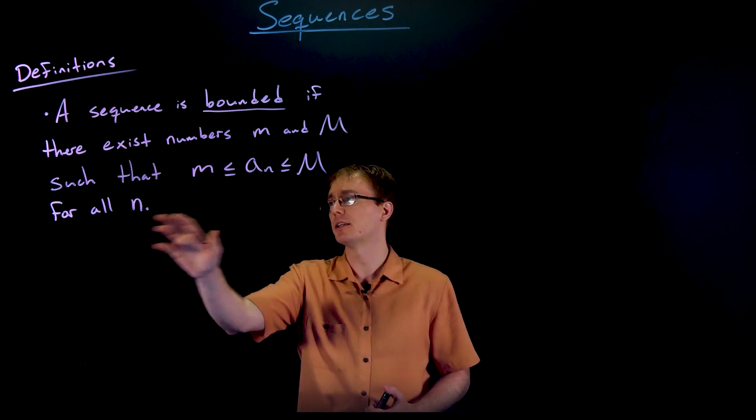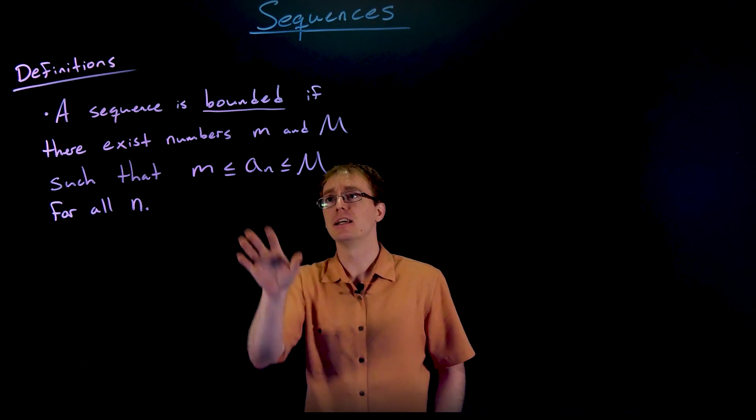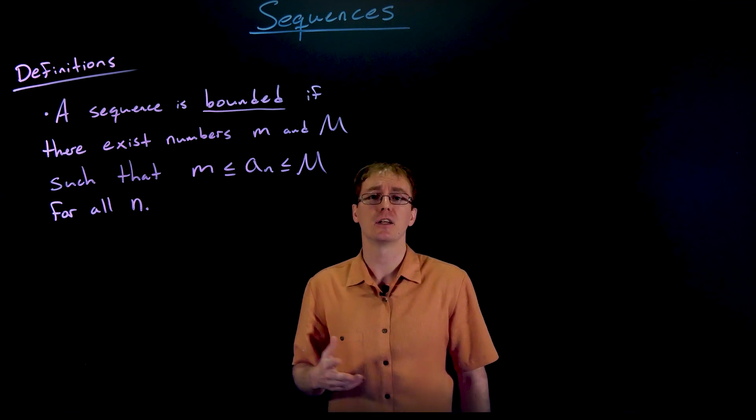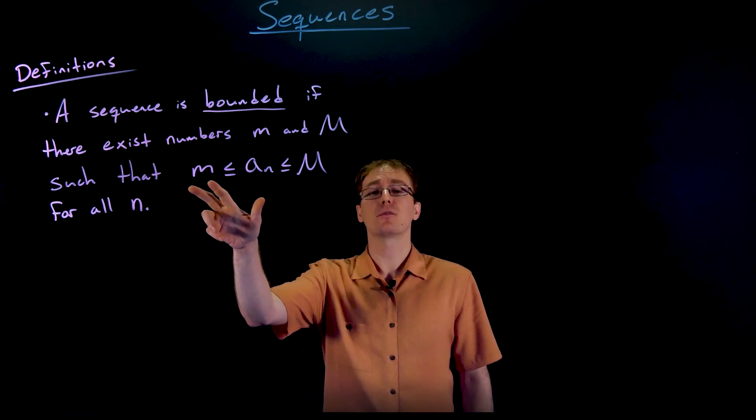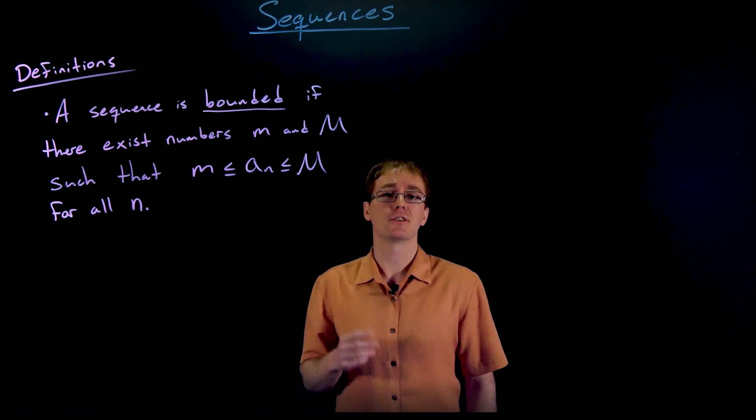All the terms in our sequence, no matter what the n value is, can be squeezed between these two numbers, little m and big M. So for a sequence to be bounded, it has to have both this lower bound as well as this upper bound.